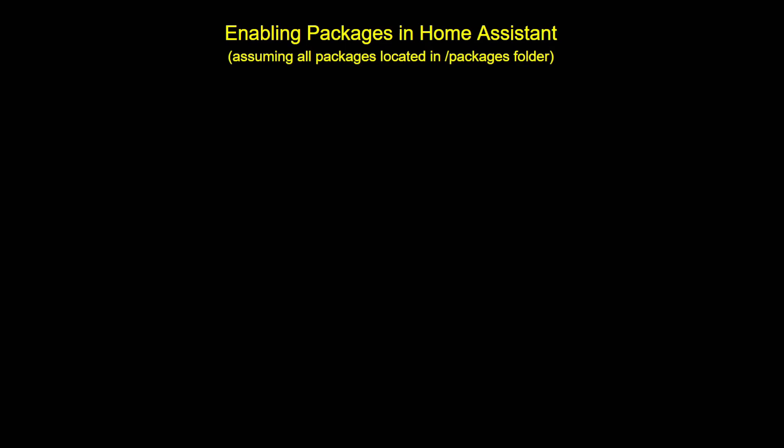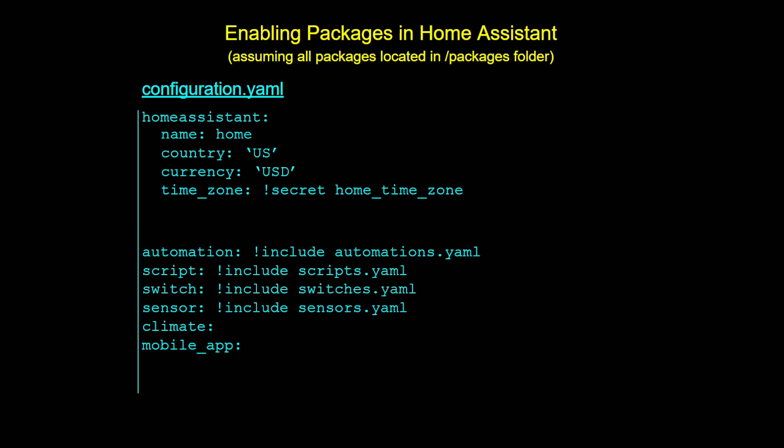So say you do want to enable packages and use those in Home Assistant. I'm going to assume you've created a folder — that's where you're going to place your packages. I call mine 'packages,' but you can call it whatever you like. In your main configuration.yaml file, you're going to need to put another include statement. At the very top of your configuration.yaml you probably have a Home Assistant section containing things like your country and time zone, followed by all of your different integration types. To use packages, we just need to put in another include statement. In this case, it's: packages: !include_dir_named and then the name of the folder.